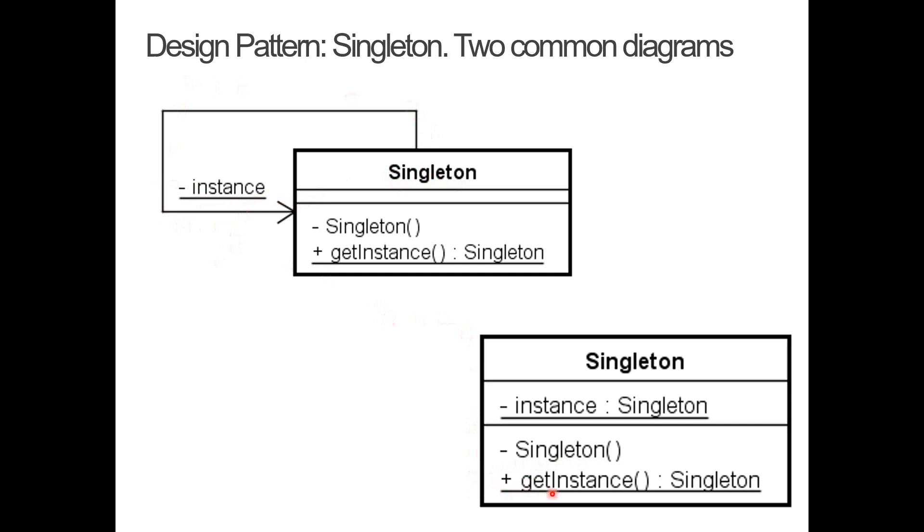Private constructor. Public getInstance that is static. It returns a type, the same as the singleton class here. If this was your logger, then it would be called logger and it would return logger. And we have the private static singleton variable called instance here.